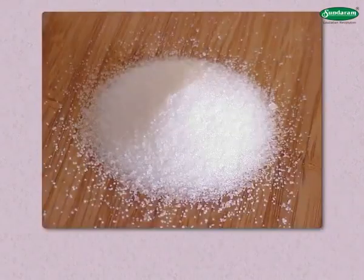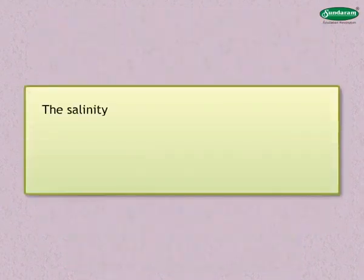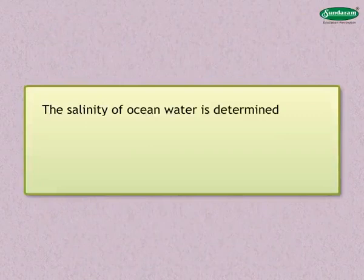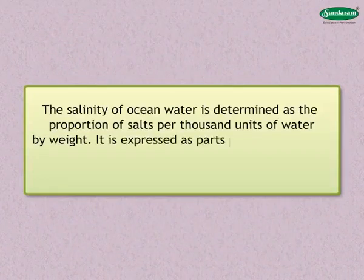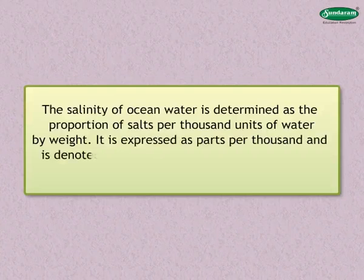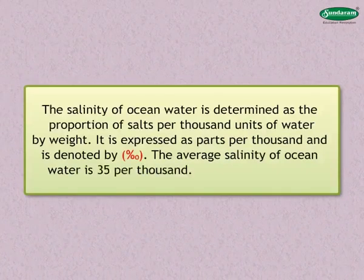Amongst these, sodium chloride or common salt has the maximum proportion. The salinity of ocean water is determined as the proportion of salts per thousand units of water by weight. It is expressed as parts per thousand. The average salinity of ocean water is 35 per thousand.